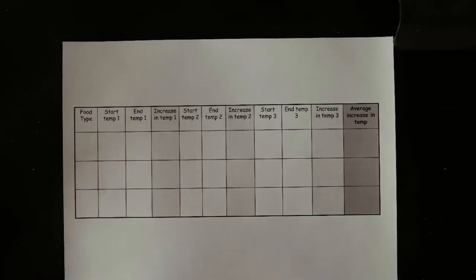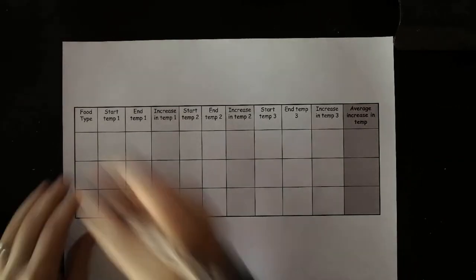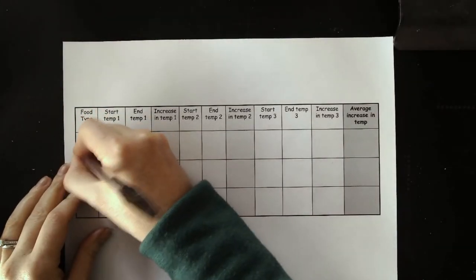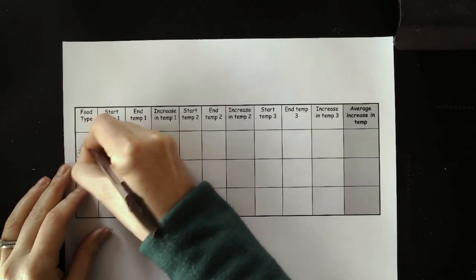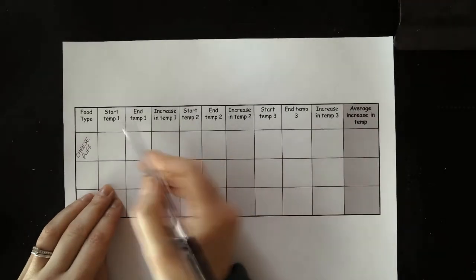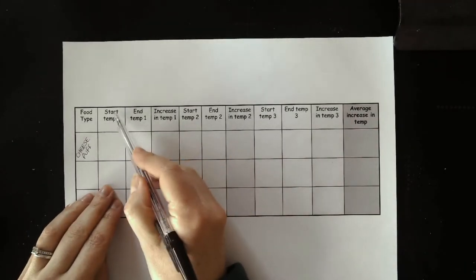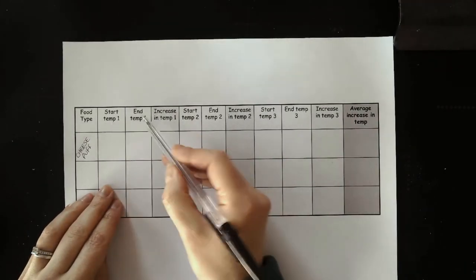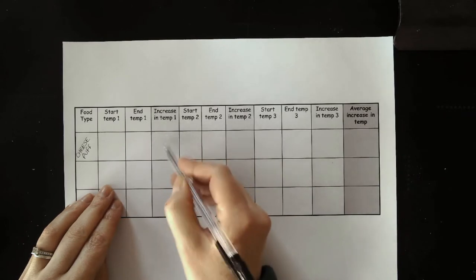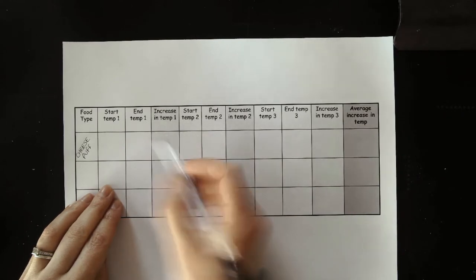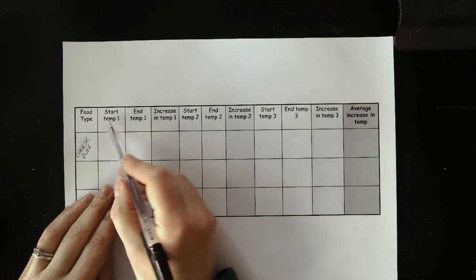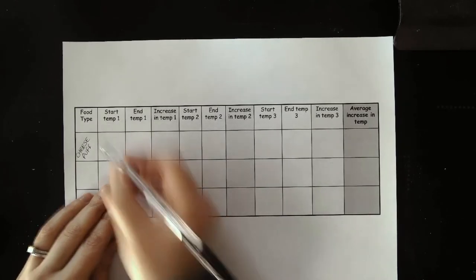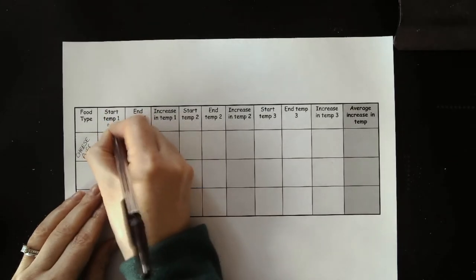This is the table I'm going to use to record my results. So the first crisp I'm going to do is the cheese puff. So food type is cheese puff. And then test one, I need the start temperature, the end temperature, and then I can calculate the increase. There is however one thing missing from my results table. A results table always needs units. So the temperature is measured in degrees Celsius.